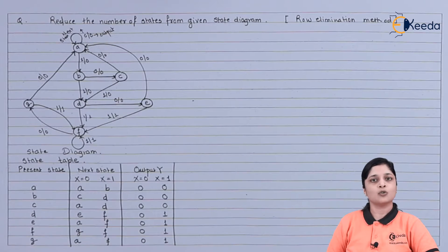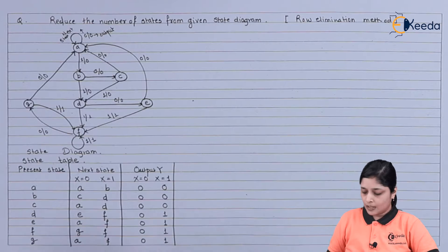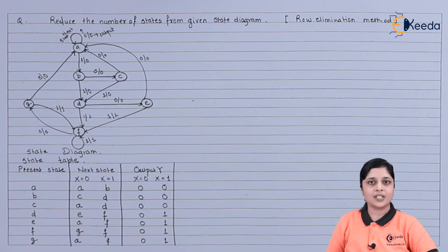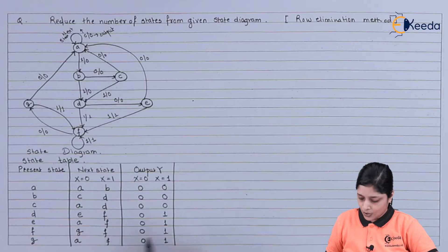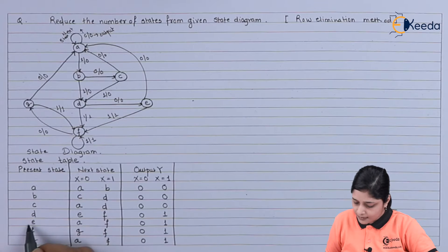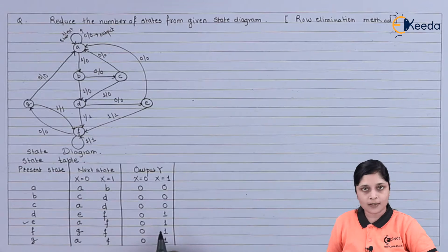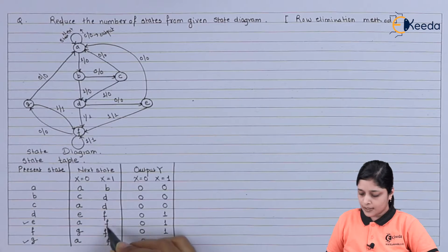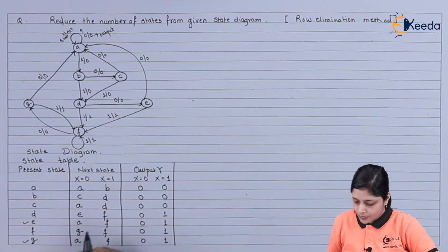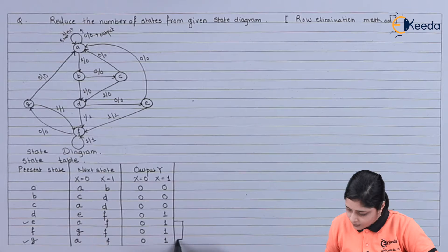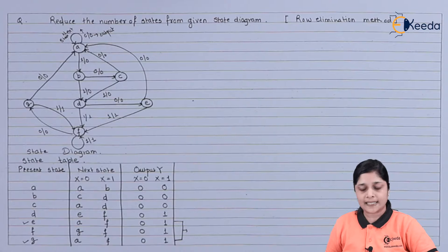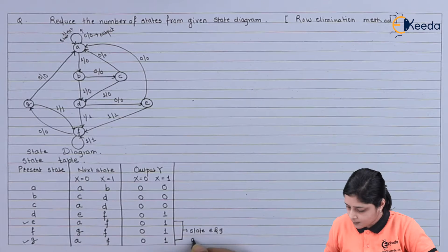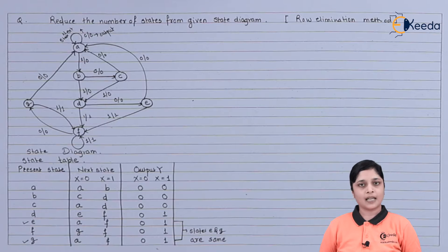Now we apply the row elimination method to reduce the number of states. We search for rows with matching outputs and matching next states. Looking at state E: next states are A and F with outputs 0 and 1. State G also has next states A and F with outputs 0 and 1. These two rows are the same, so states E and G are equivalent.